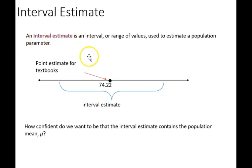Whereas a point estimate is a single point, an interval estimate is a range of values that would likely surround a point estimate. From the previous example where we had the sample mean of $74.22, we can also look at a range of values likely to fall around that in the population. How confident do we want to be that the interval estimate will contain the actual population mean?